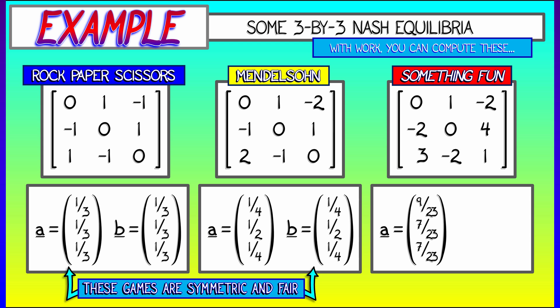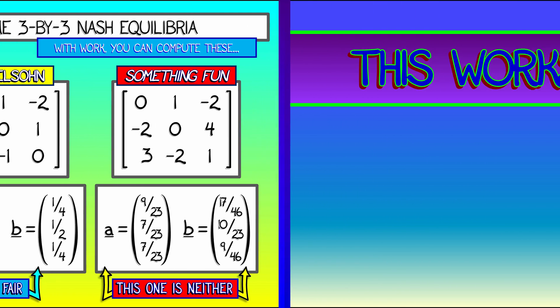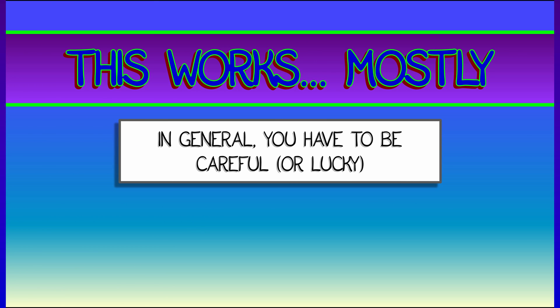However, in this random thing that I wrote down, the optimal probability for A is to play strategy one nine twenty-thirds of the time, and the other strategy seven twenty-thirds of the time. And for player B, it's totally different. Oh my gosh, what is that? Seventeen forty-six? What? Where'd that come from? I don't know. That's not obvious. But that is what the Nash equilibrium is. That is the optimal strategy. And in this case, one player has a definite advantage over another and will win over the long run. Which is it? It's not so obvious.